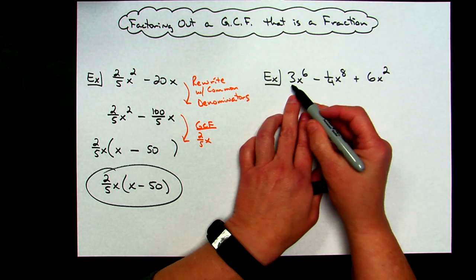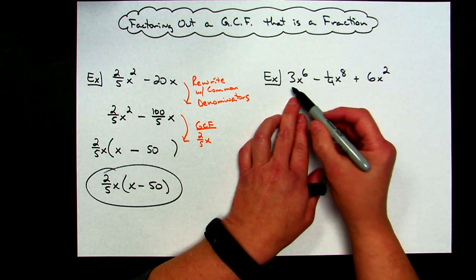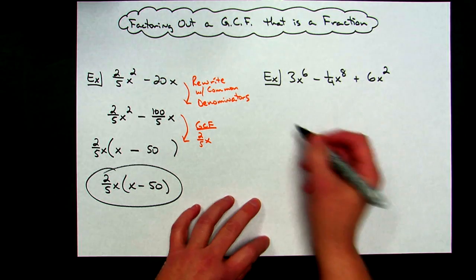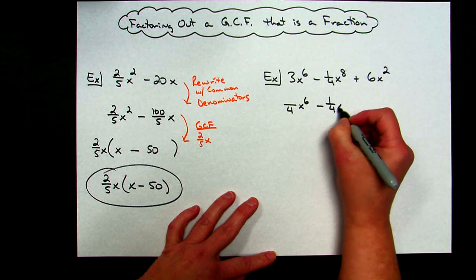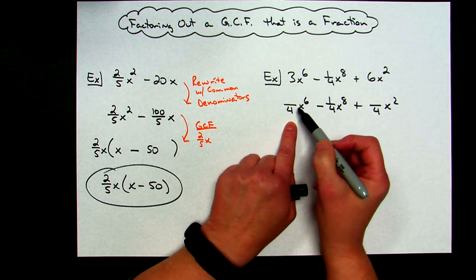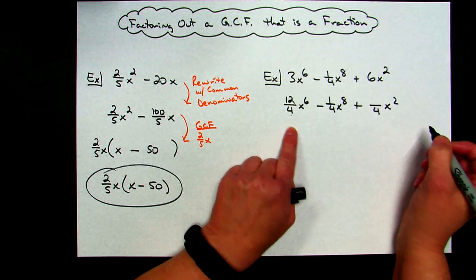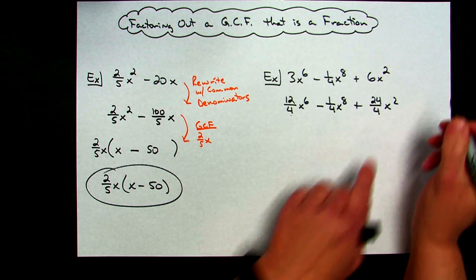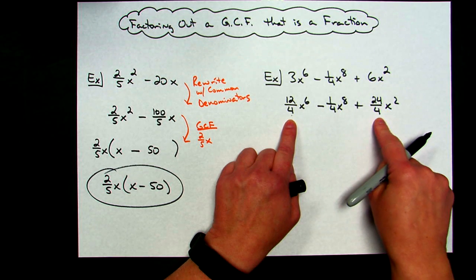On this next example, I've got 3x⁶ minus 1/4 x⁸ plus 1/6 x². I'm going to look at all these coefficients and rewrite them with a common denominator. I'll choose 4 as my common denominator. So the first term becomes something over 4 times x⁶, the second term already has denominator 4 so I just rewrite it, and the third term becomes something over 4 times x². The numerators: what divided by 4 gives 3? That's 12. What divided by 4 gives 1/6? That's going to be 24 — so 24/4 for that last term. Now I can look for the greatest common factor: I've got 12/4, 1/4, and 24/4.